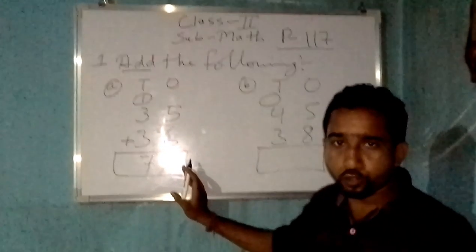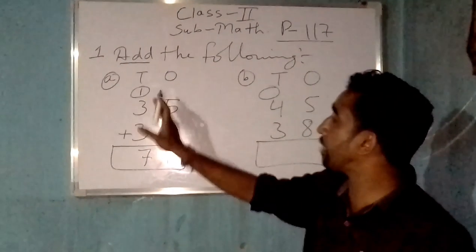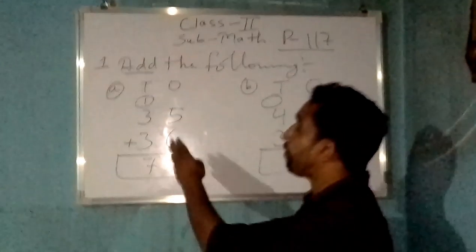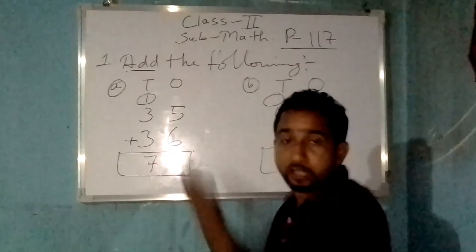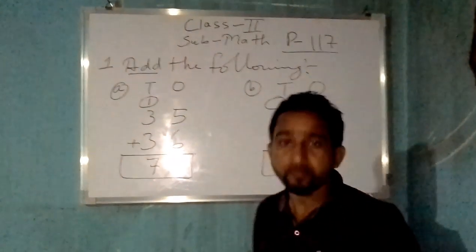So this is for carrying. Whatever we carry here we write here, so that when we add it we can comfortably do it and very easily we can find the sum of these two numbers. Clear all of you? Like that.